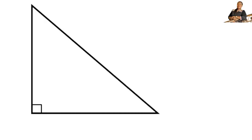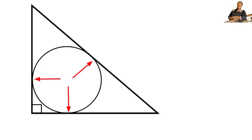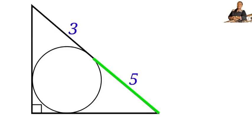We are given a right angle triangle with a circle inscribed in it, such that the circle touches the right angle triangle at 3 points. On the hypotenuse, this length is 3 units and this other length is 5 units. We are to find the area of the triangle.